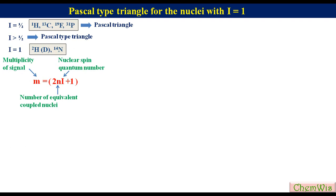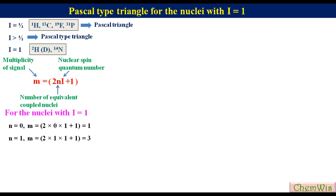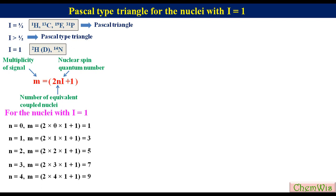So, for the nuclei with i equal to 1: if n = 0, M = 2(0)(1) + 1 = 1, that is it will be a singlet. For n = 1, M = 2(1)(1) + 1 = 3. For n = 2, M = 2(2)(1) + 1 = 5. Similarly, for n = 3, M = 7, and for n = 4, M = 9, and so on.